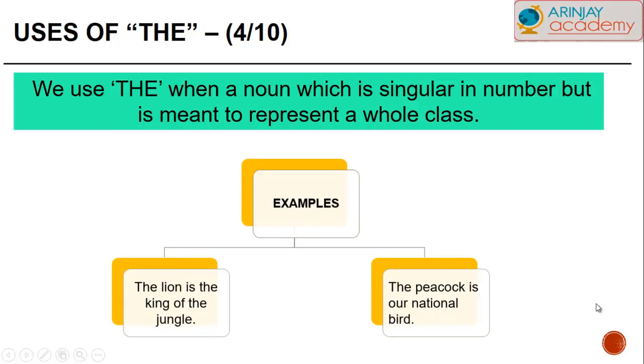We also use THE when a noun which is singular in number but is meant to represent a whole class. For example, the lion is the king of the jungle. Here, the lion implies the whole class of lion. The peacock is a national bird. Here, the word peacock represents the whole class of the word peacock.